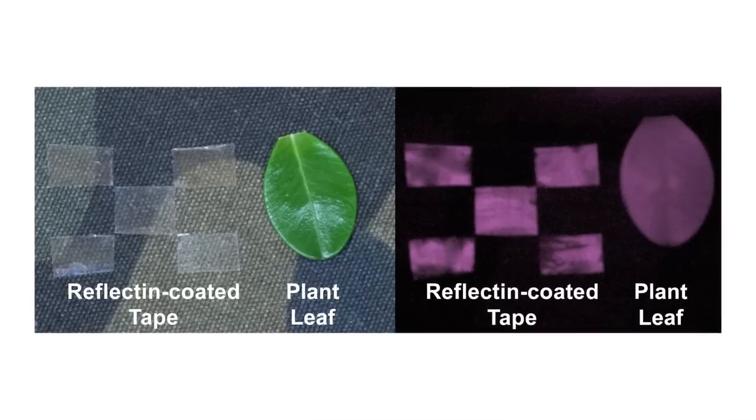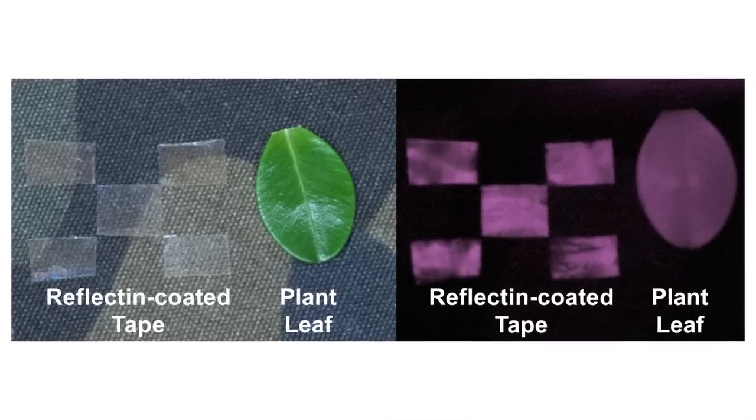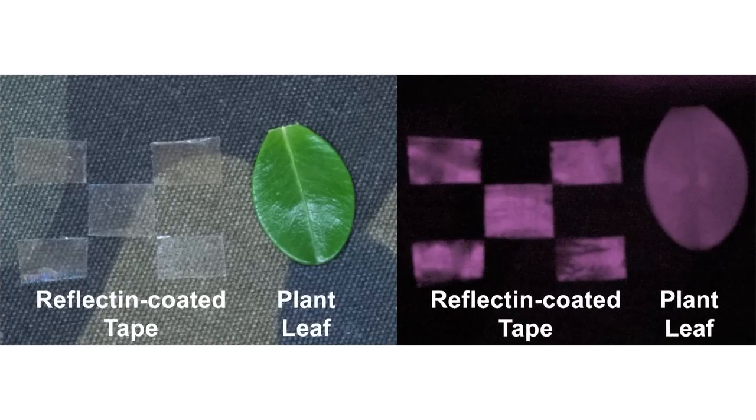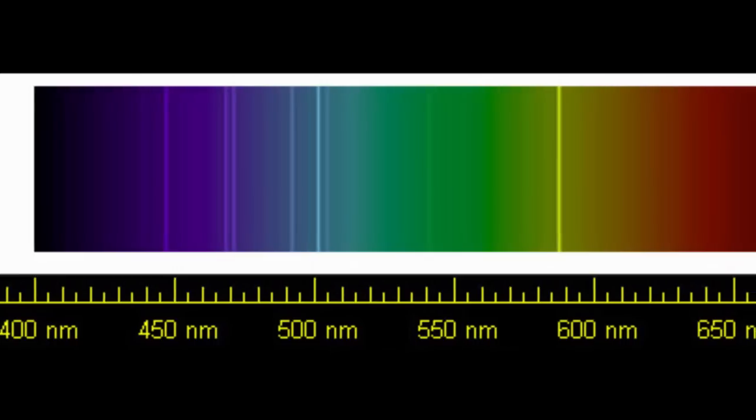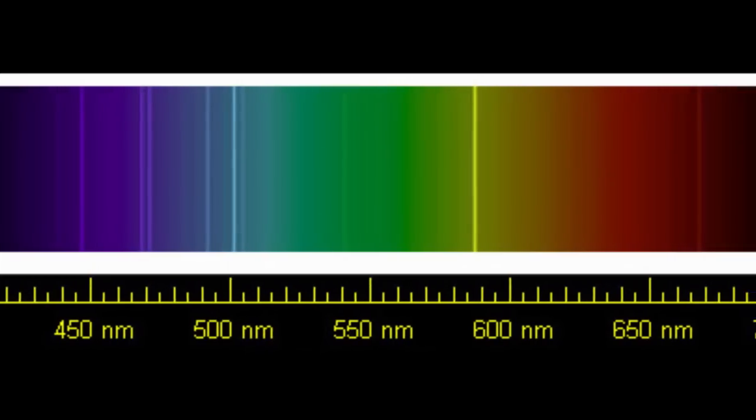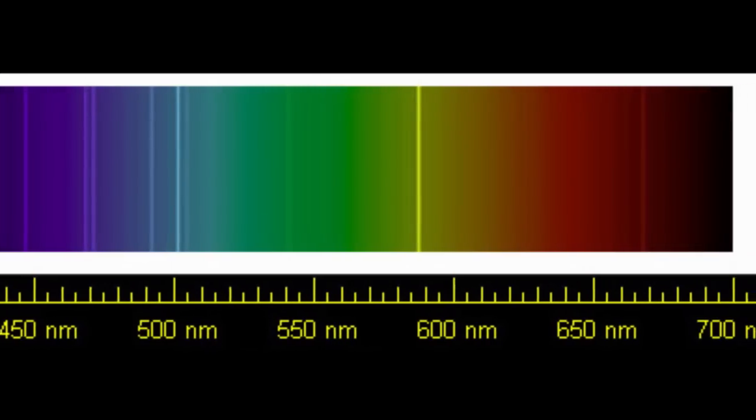The great thing about reflectin, Gordetsky says, is that it can be manipulated into just about any color using a mechanical or chemical stimulus. You can tune their coloration by changing the thickness of the overlaid protein film. A thinner film will appear blue, while a thicker film will look orange using a typical optical camera.